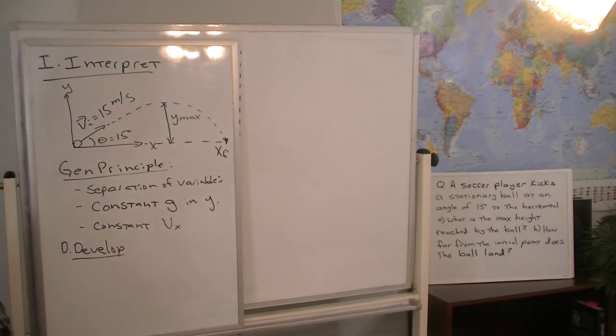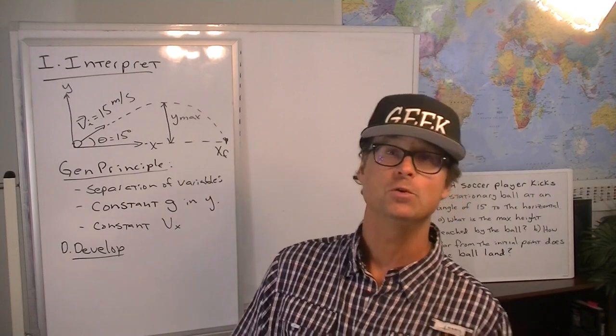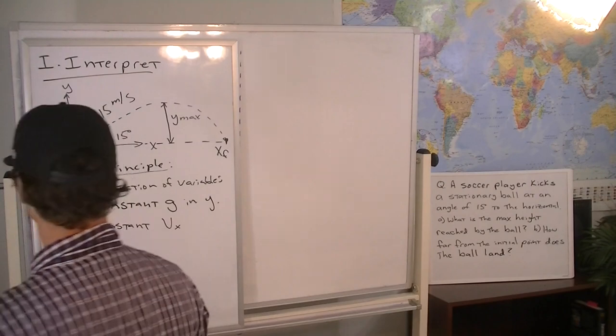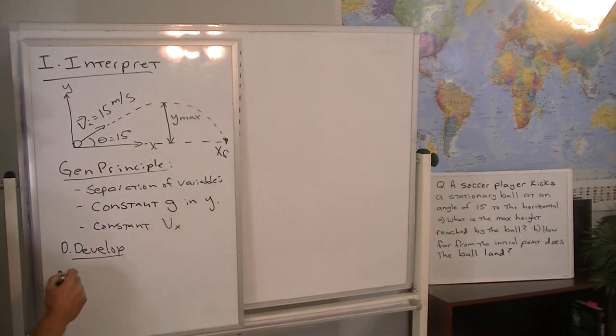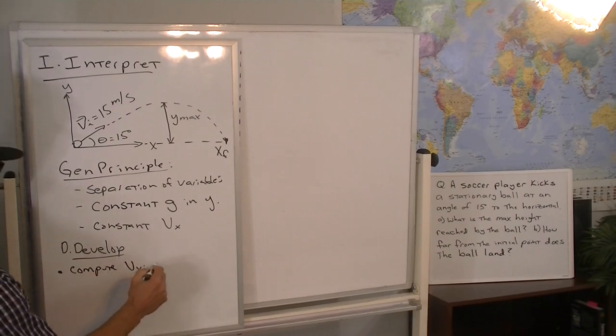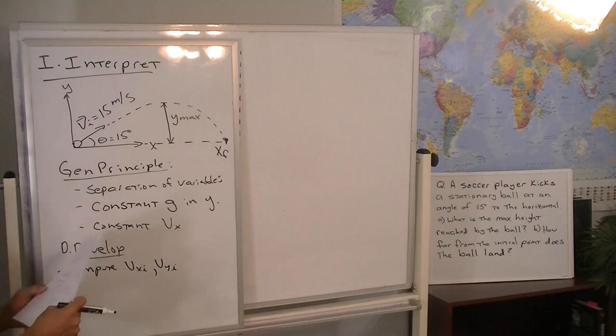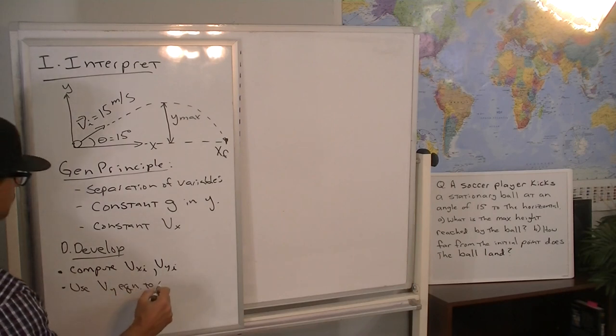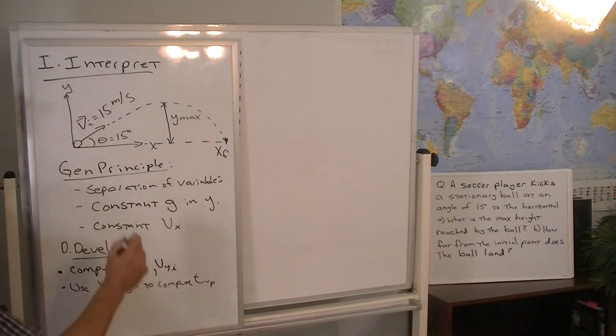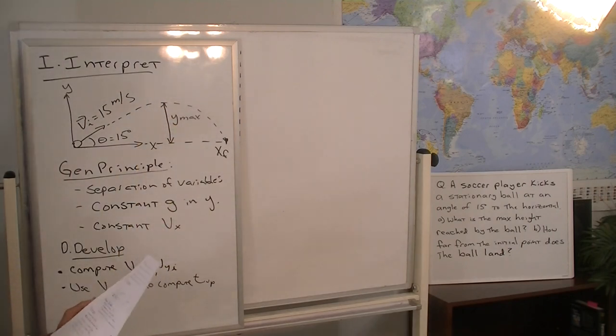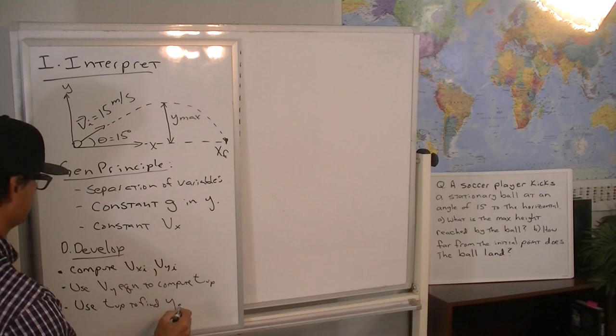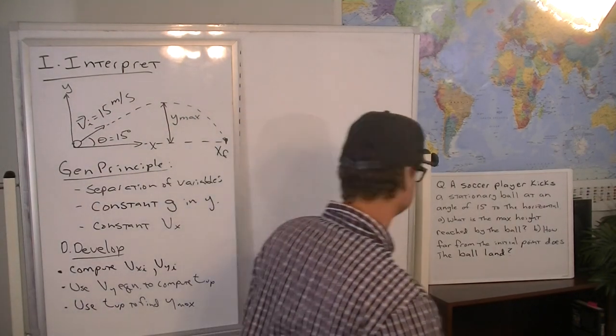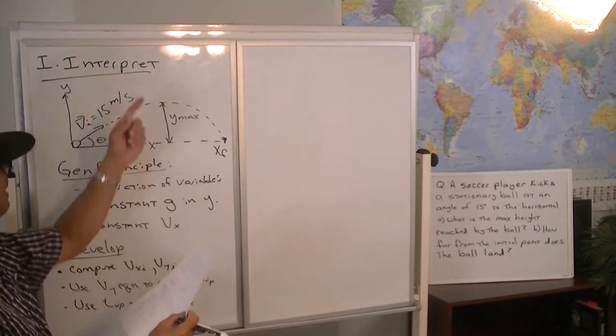Our plan of attack, and this is a little more involved procedure than you may be used to in some of the simpler problems. But as we mature in our problem solving skills, we'll come to appreciate the ability to do sort of bullet point plans that are more than two or three bullet points. We're going to compute the X and Y components of initial velocity. We're going to use the VY equation to compute T up, I'm calling it. That's the amount of time you spend going up before you reach the peak. Use T up to find the peak height of Y max. So those three steps really just took us through the first half of the problem finding Y max.